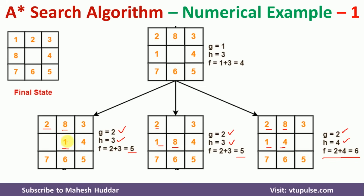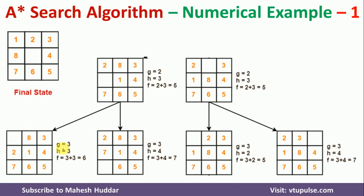From the first node at depth 3, moving 1 back to the right gives the same position so we skip it. The two valid moves are: tile 2 from top to bottom and tile 7 from bottom to top. From the second node, moving 8 back up gives the same state, so the valid moves are: tile 2 from left to right and tile 3 from right to left. For the first possibility (2 top to bottom): h = 3, f = 3 + 3 = 6.